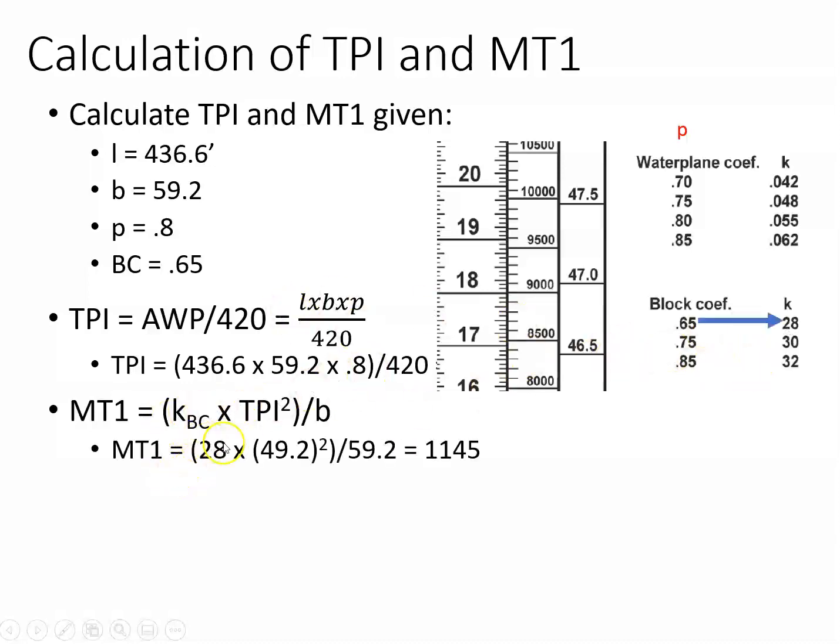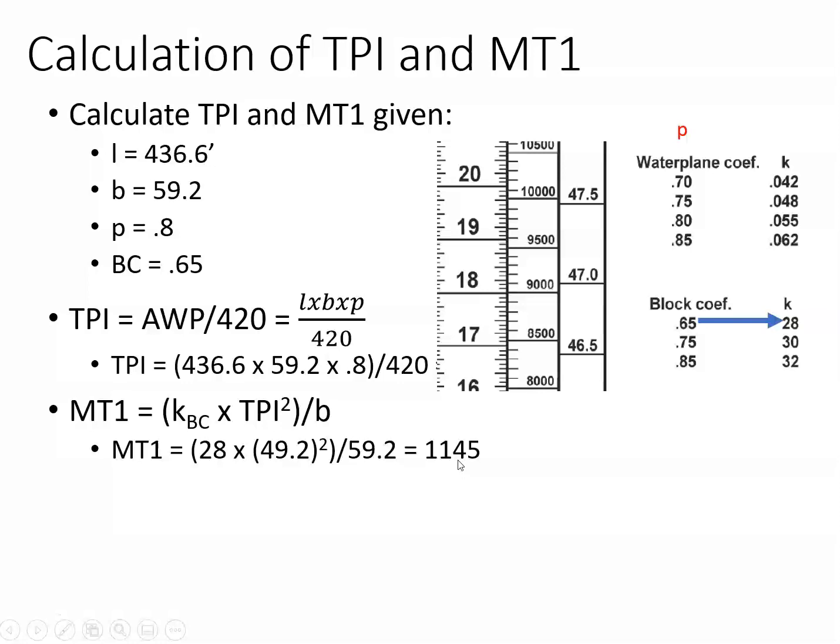That number 28 goes here, not the 0.65. So 28 times 49.2, which I calculated, and my TPI is 49.2. I square that, and I divide that by my breadth, my beam, 59.2, and I get a moment to trim an inch of 1145. That's how you do those problems, and there's a few of those problems to do for this assignment. Thanks.